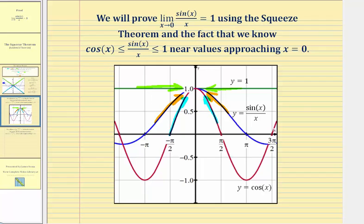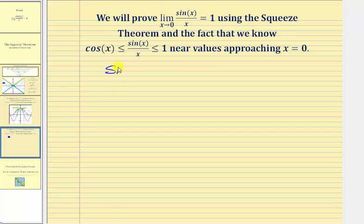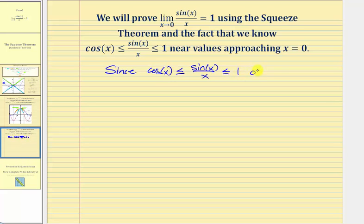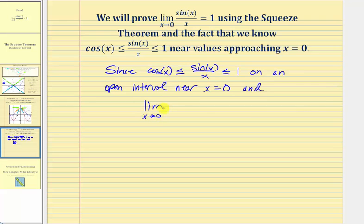But let's write this out more formally as a proof. Since sine x divided by x is greater than or equal to cosine x and less than or equal to one on an open interval near x equals zero, and the limit as x approaches zero of cosine x equals one, and the limit as x approaches zero of one equals one,